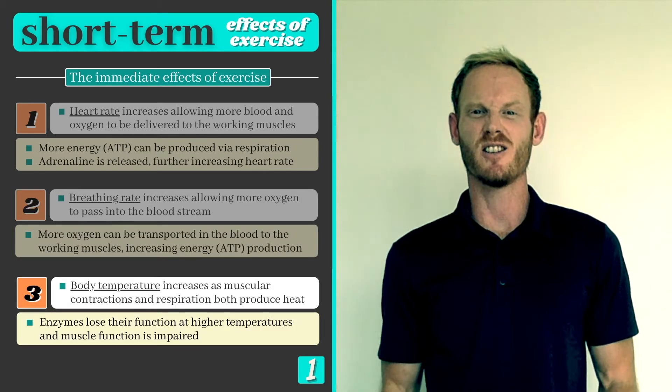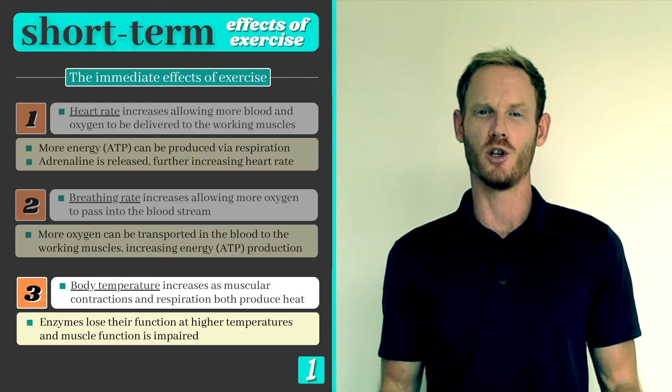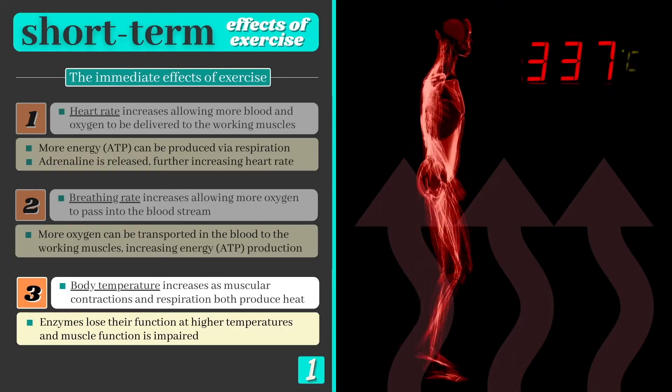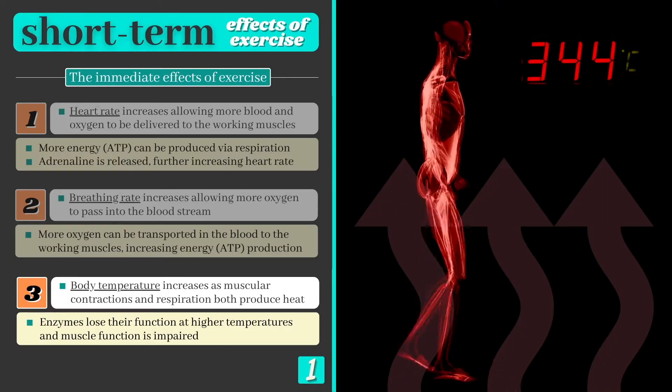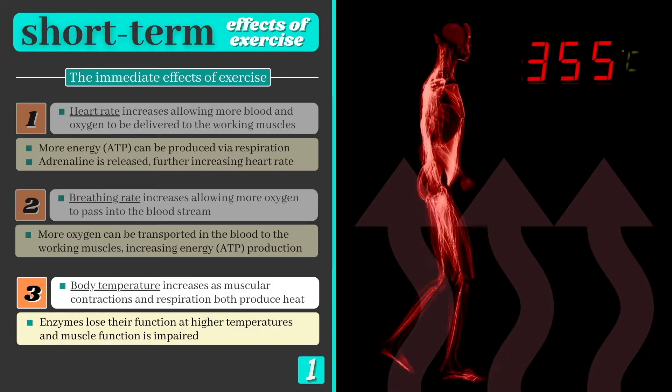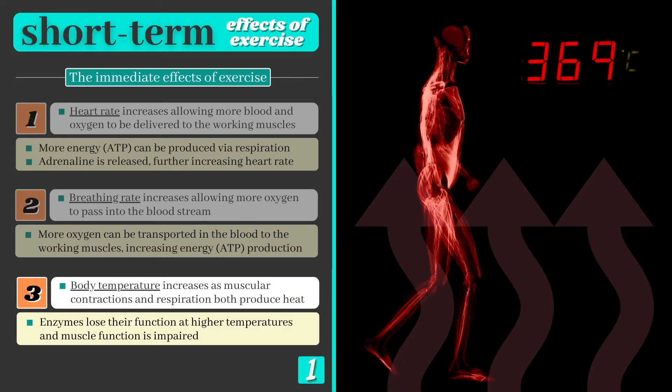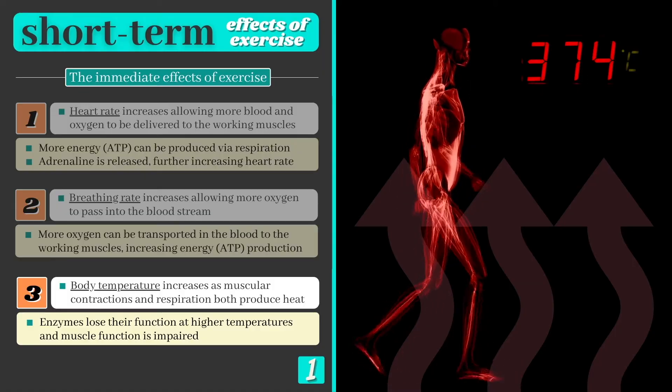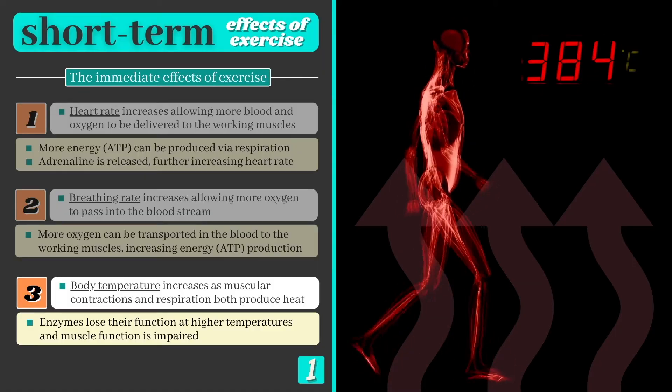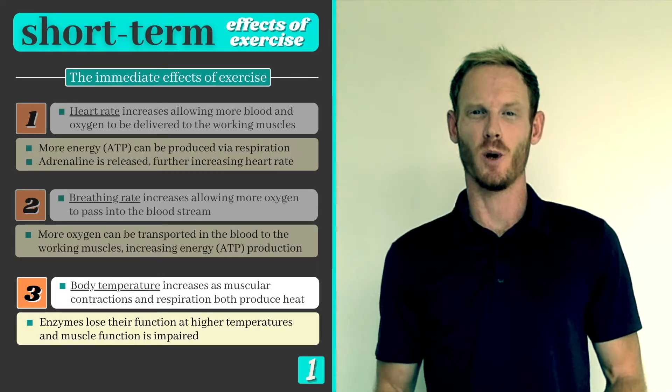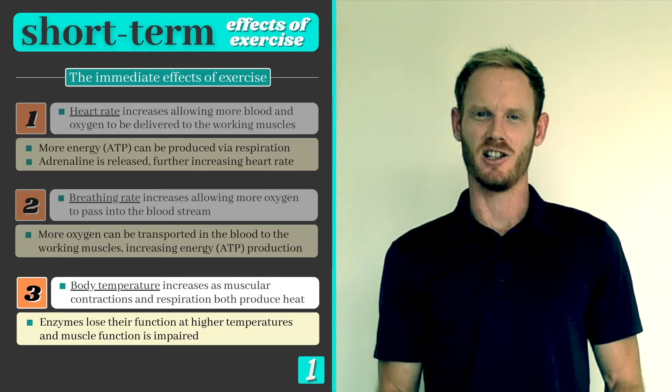Since the processes of muscular contraction and respiration both produce heat, it's no surprise that body temperature begins to rise when we exercise. This response must be regulated as enzymes lose their function at higher temperatures, affecting the ability of our muscles to contract efficiently. Our next two responses serve to rid the body of some of that heat energy.